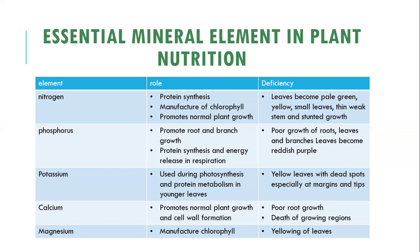The deficiency of nitrogen can lead to leaves becoming pale green or yellow, small leaves, thin weak stems, and stunted growth. These are some of the deficiency symptoms of nitrogen.